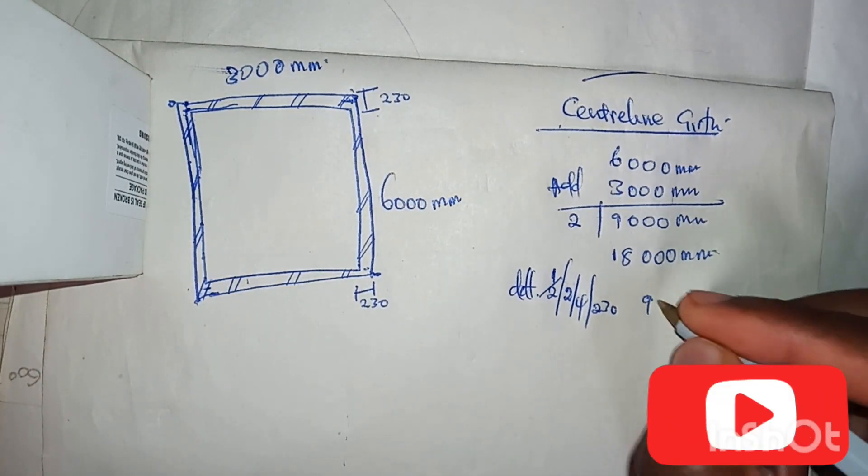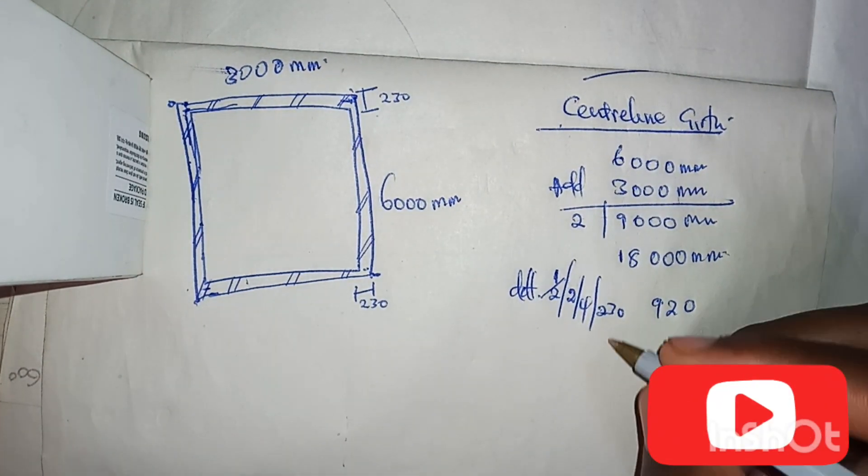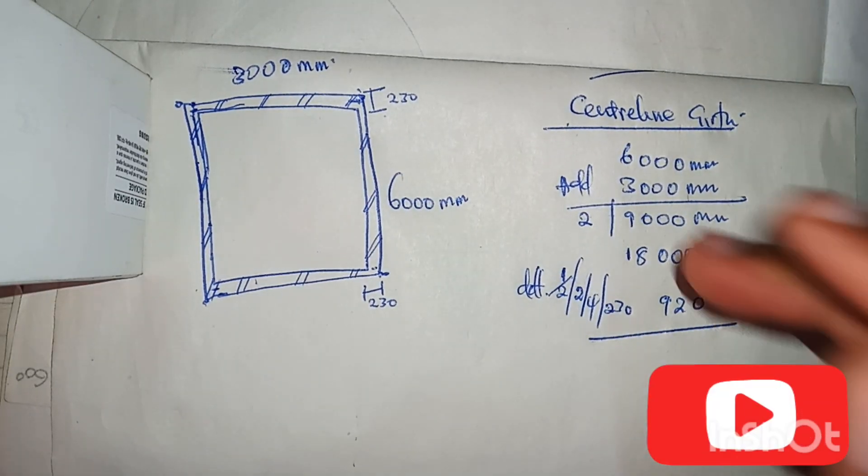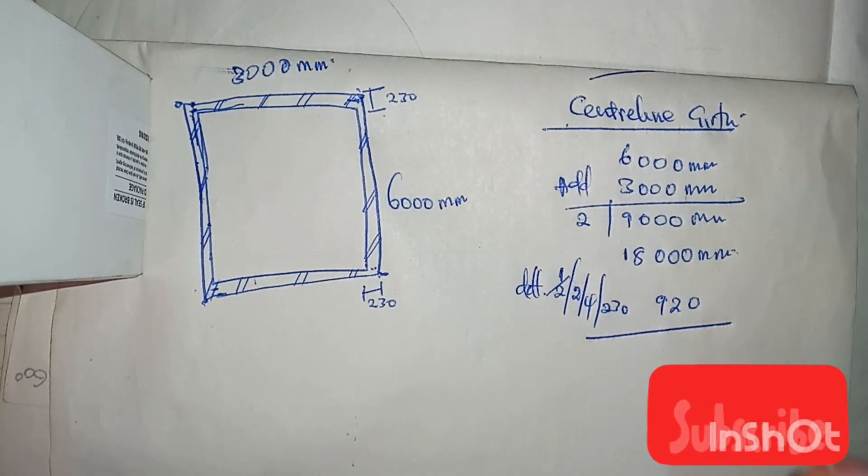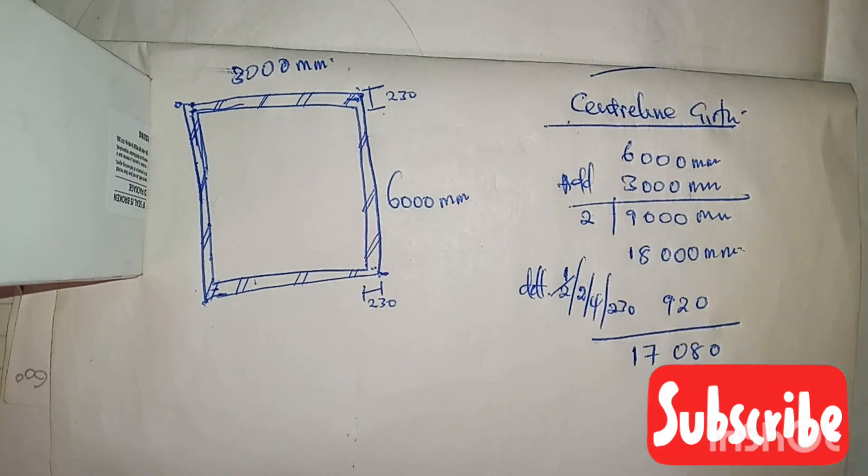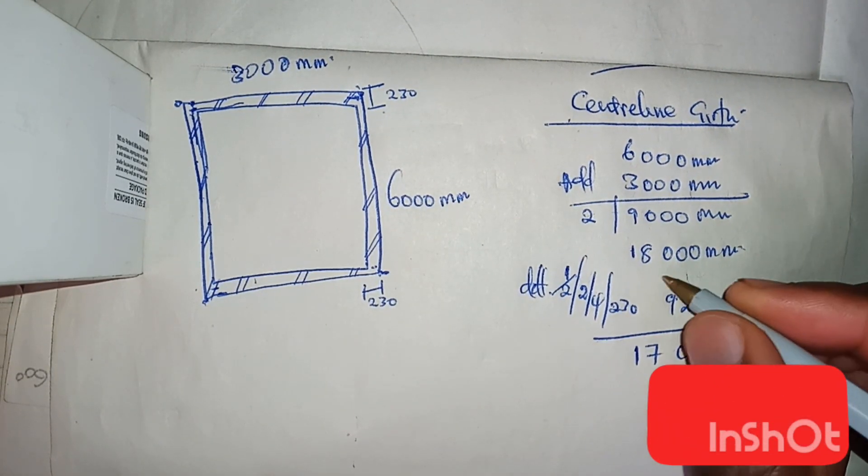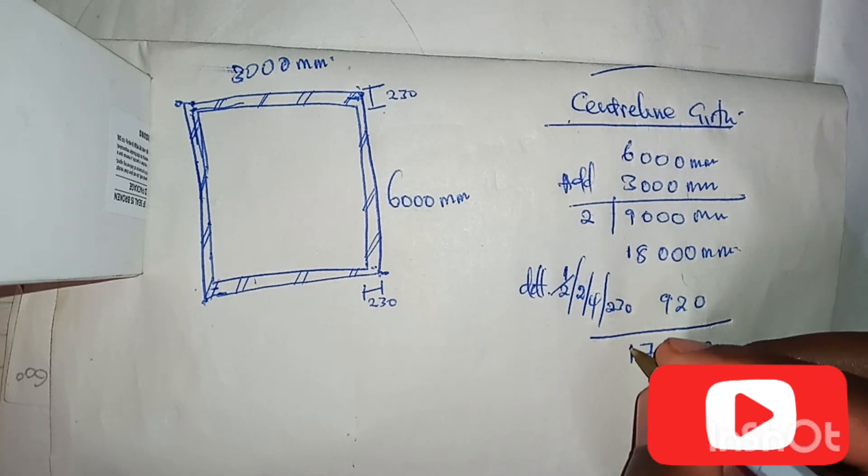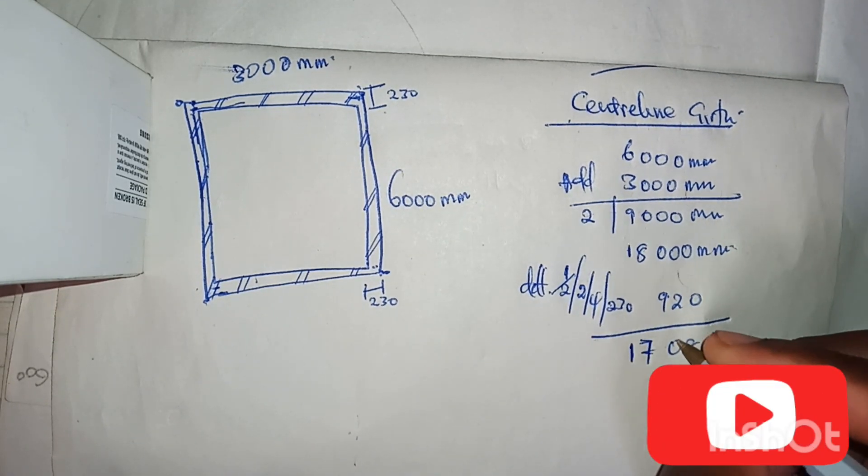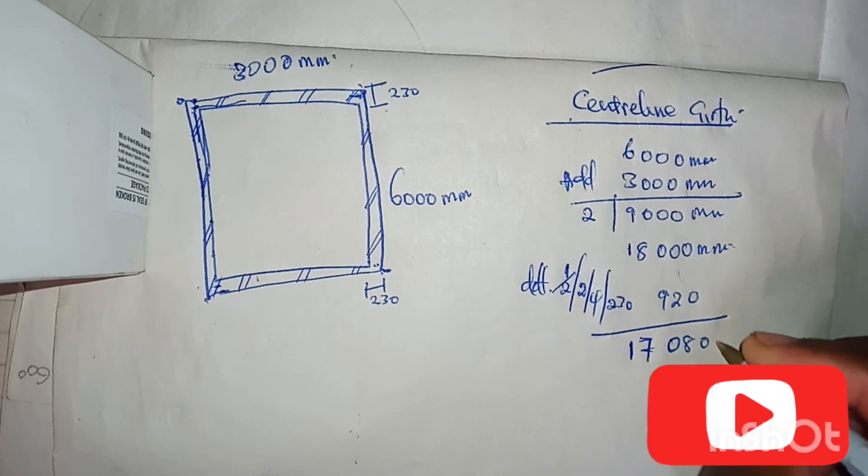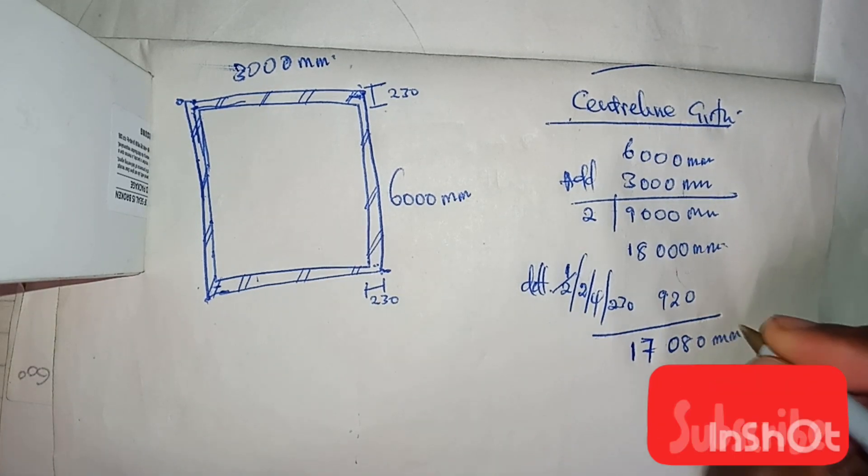Which gives us 920. If you punch it in on your calculator, then if we deduct this one from this one, we get our 17,080 millimeters.